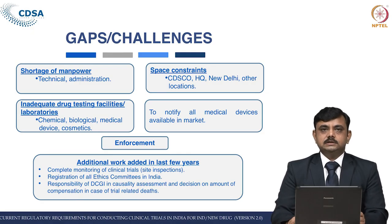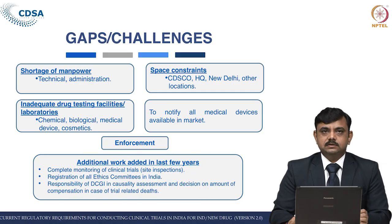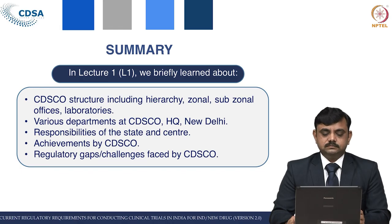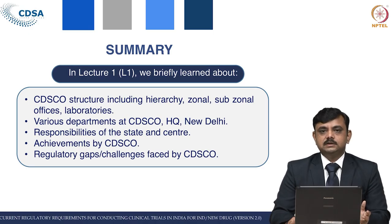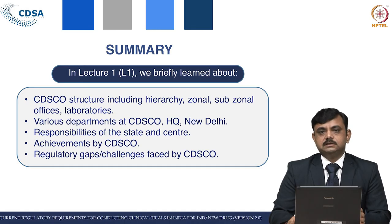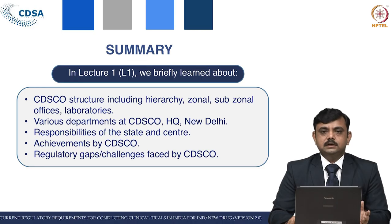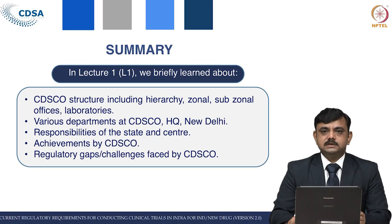In summary, this lecture covered CDSCO, its different offices including hierarchy, sub-zonal offices, laboratories and their functions, various departments at CDSCO headquarters — new drug, medical device, cosmetic and biological departments with subdivisions — and the responsibilities of the state and center. The center is responsible for approving clinical trials, medical devices and new drugs, while the state is responsible for manufacturing licenses, GMP inspections and drawing samples. We also covered CDSCO achievements and regulatory gaps and challenges.